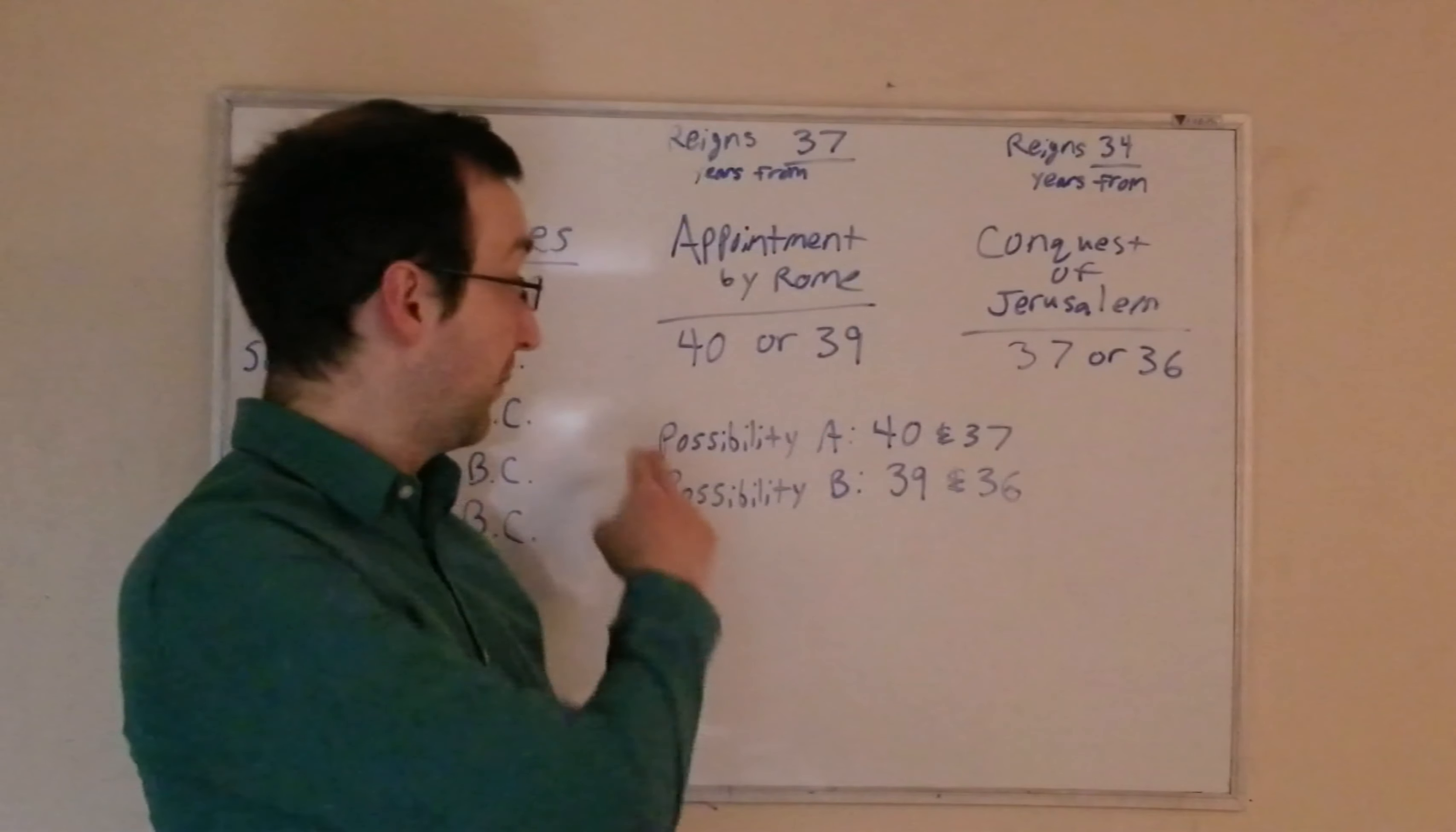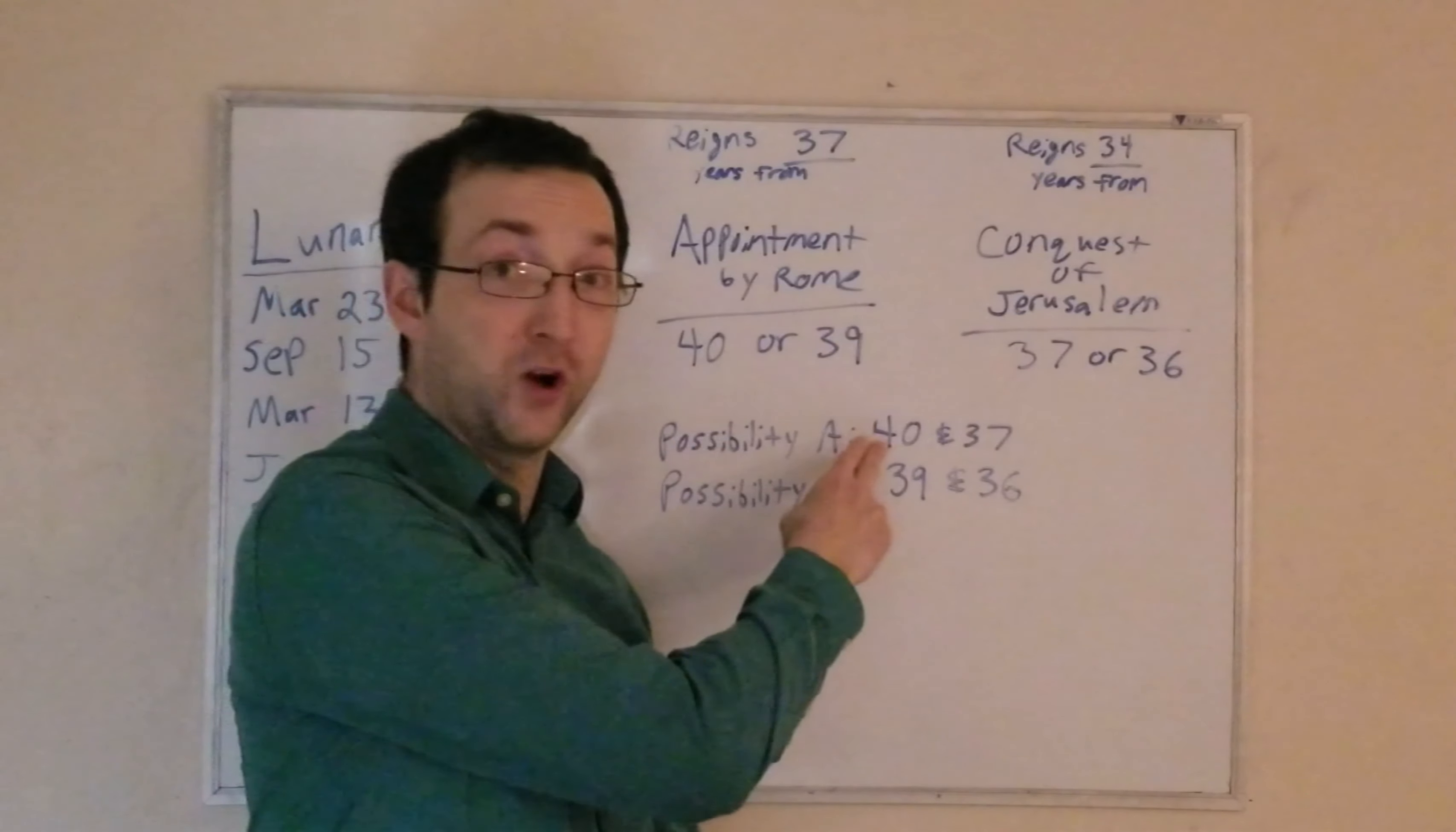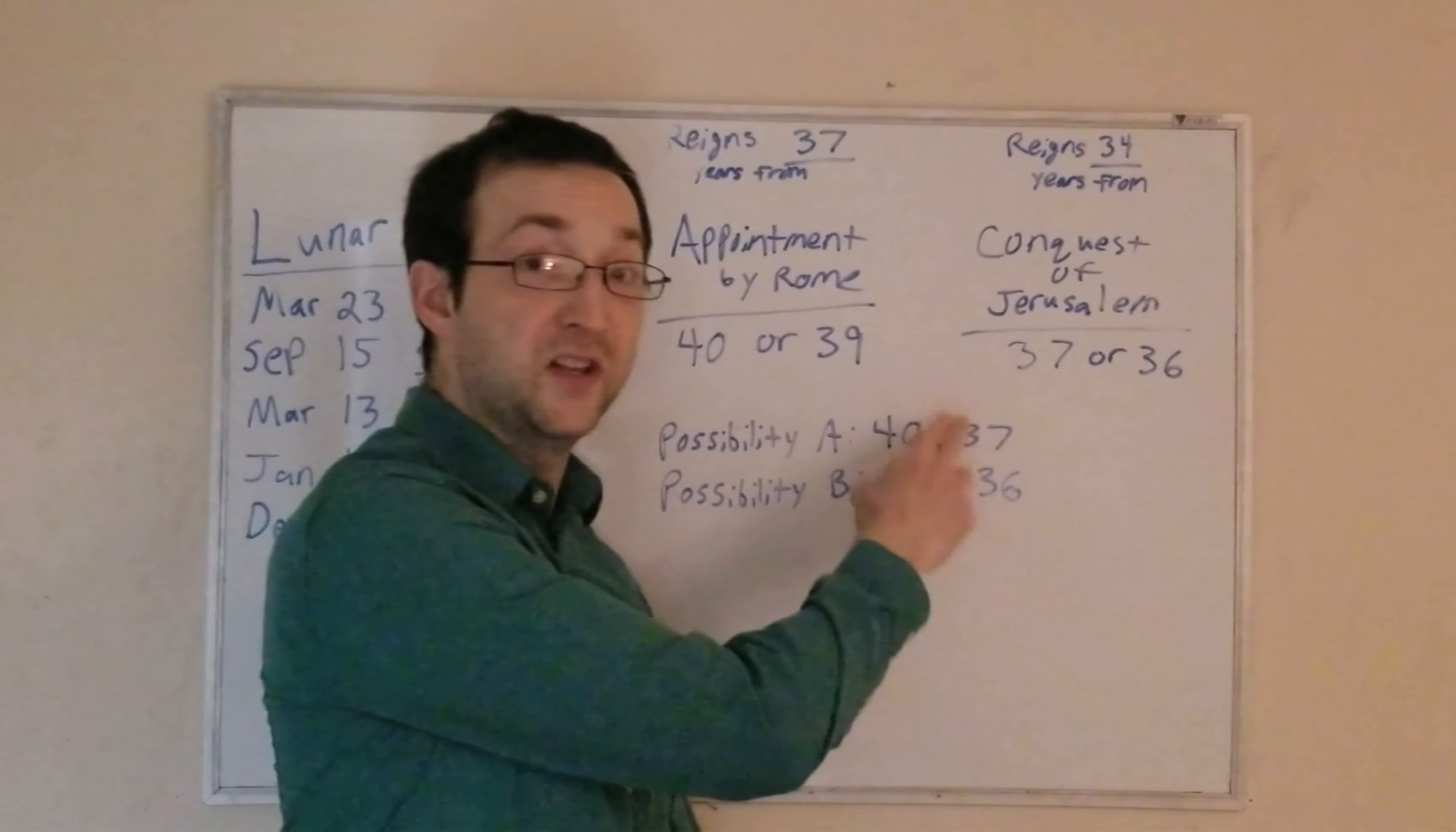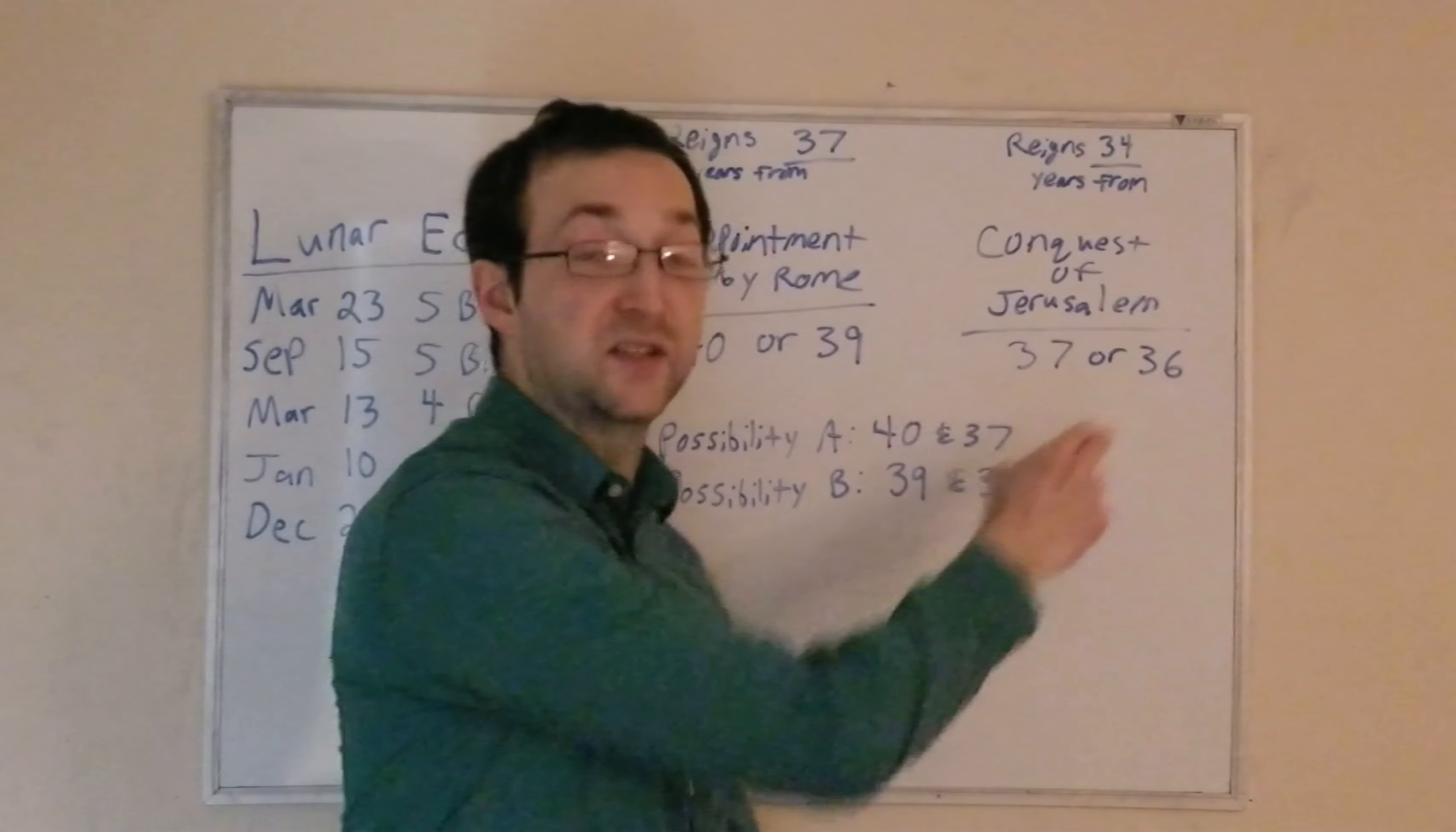It assumes, possibly A, Herod is appointed by Rome in 40 BC, not 39, that's a mistake, and he conquers Jerusalem in 37 BC, not 36, that's a mistake.